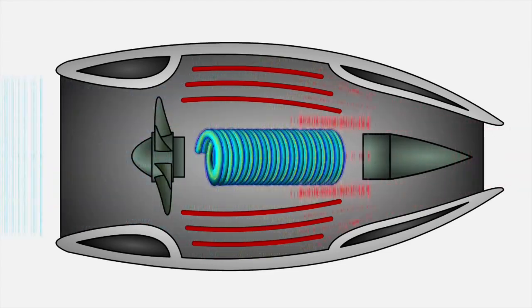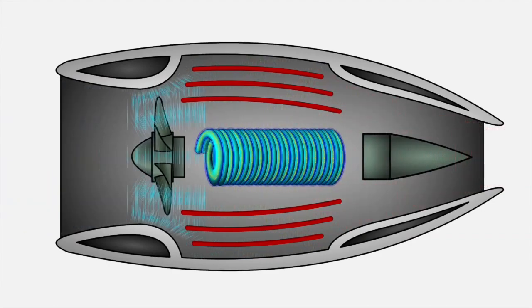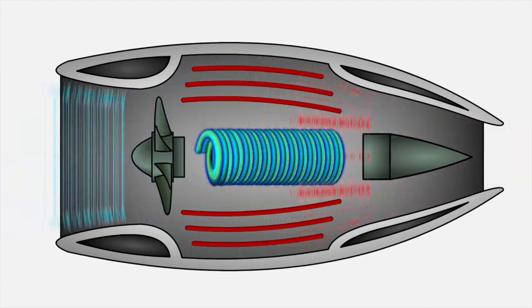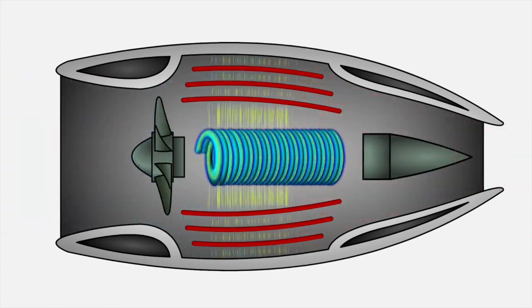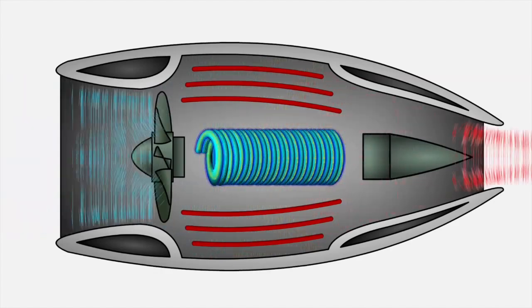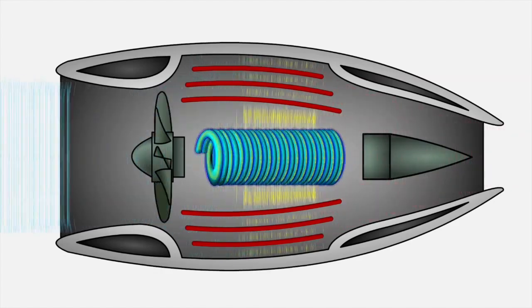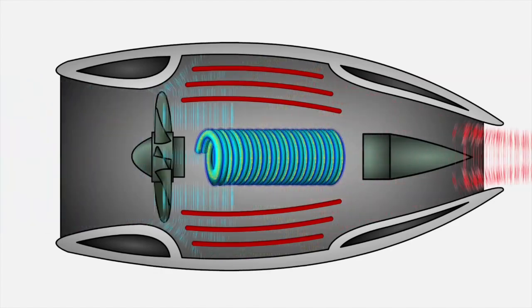Cold air is compressed by a compressor fan and directed through and around the intercoiled reactors and radiation absorbers. The energy of fusion heats this air which is ejected as jet thrust via the exhaust nozzle.